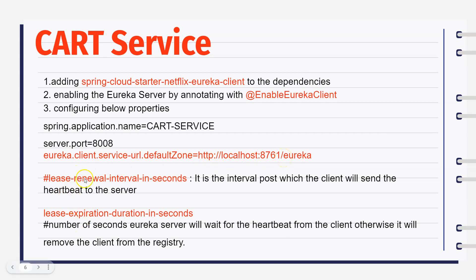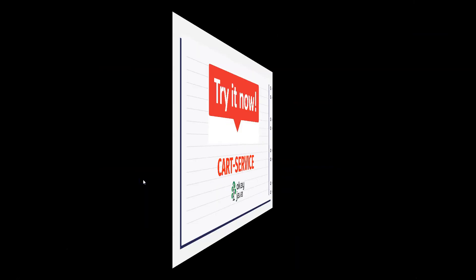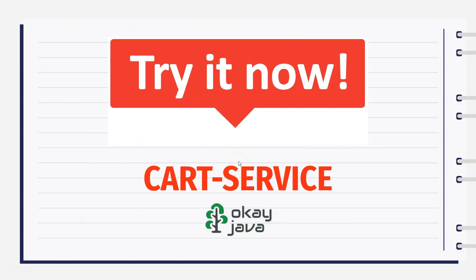A couple more properties worth understanding: lease-renewal-interval-in-seconds is the interval after which the client sends a heartbeat to the server. lease-expiration-duration-in-seconds is the number of seconds the Eureka Server will wait for a heartbeat from the client before removing it from the registry. In production you may see these two properties, but we are not going to use them in this demo.